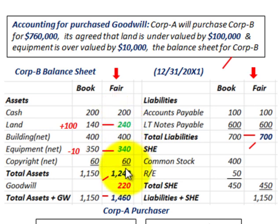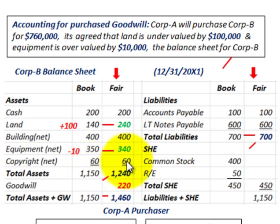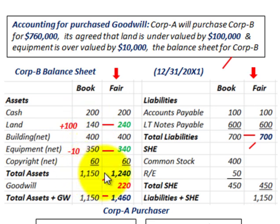Remember, everything here is in thousands of dollars. Copyright had the same book and fair value of $60,000. So our total assets at book value were $1,150,000, and at fair value, $1,240,000.